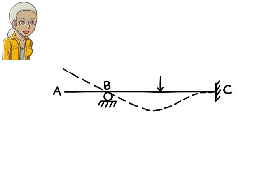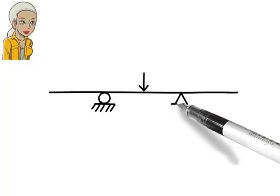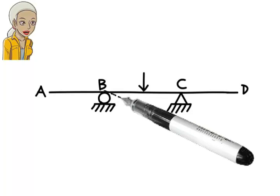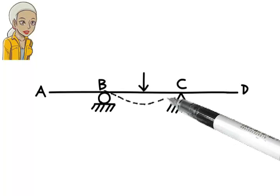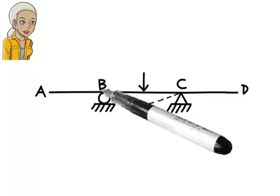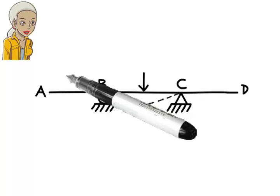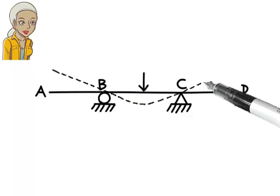Here are a few more examples illustrating the process of drawing the deflected shape of beams. Here, the beam deflects downward under the load in between the supports. Consequently, there is a clockwise rotation but no deflection at the left support, and a counterclockwise rotation with no deflection at the right support. Since the beam is not restrained at A, and segment AB is not subjected to any loads, the segment deflects upward. Similarly, segment CD is forced to move upward as shown.